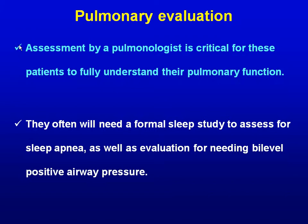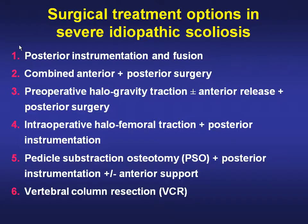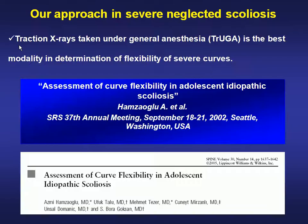The management of severe curves can potentially carry significant risk with respect to neurologic deficit, significant blood loss, and pulmonary complications. There are several surgical options: posterior instrumentation, combined anterior-posterior, preoperative halo-gravity traction, intraoperative halo-femoral traction, pedicle subtraction osteotomy, and vertebral column resection.